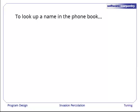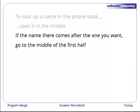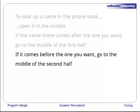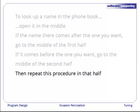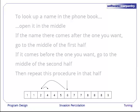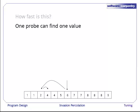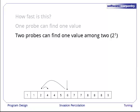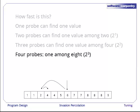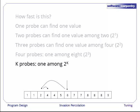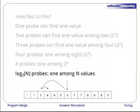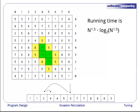Imagine you want to look up a name in a phone book. You open the book in the middle, and if the name there comes after the one you want, you go to the middle of the first half, and if the name in the middle comes before the one you want, you go to the second half. You then repeat this procedure in that half of the phone book, subdividing and subdividing until you find the name that you're after. This diagram shows the steps that you go through. How fast is this procedure? Well, one probe can find one value. Two probes can find one value among two. Three probes can find one value among four. Four probes can find one among eight, and in general, k probes can find one value among two to the k. Turning that around, log base two of n probes is enough to find a place in a list of n values. That means that the running time for our algorithm will be about n to the 1.5 times log base two of n to the 1.5.